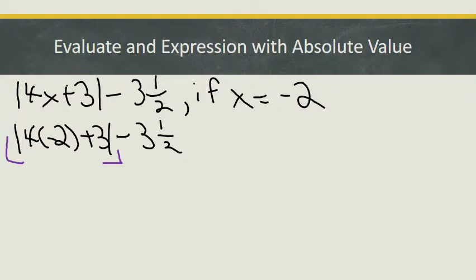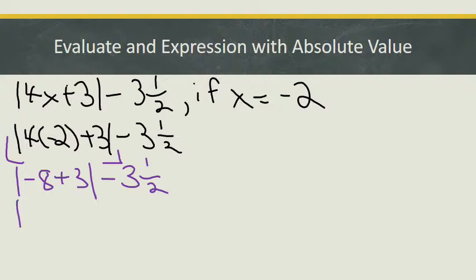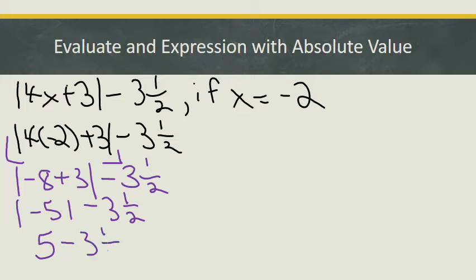Within that, I see that I'm going to have to multiply — 4 times minus 2. So I'm going to keep my absolute value because I now have minus 8 plus 3, close the absolute value symbol, minus 3½. Now I'm ready to add or subtract going from left to right, and so minus 8 plus 3 gives me minus 5. But this is the absolute value of minus 5, and the absolute value of minus 5 is actually just 5.